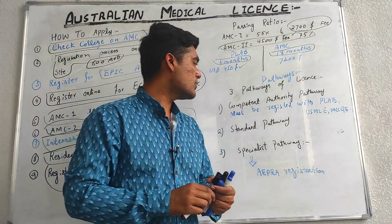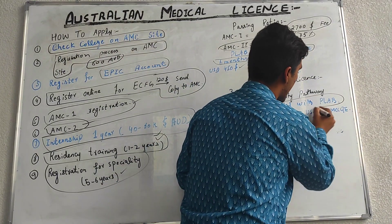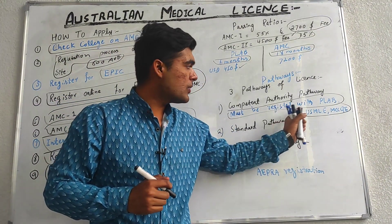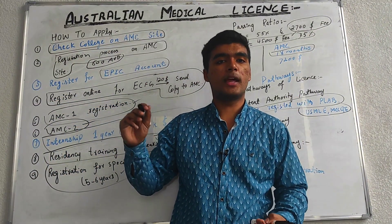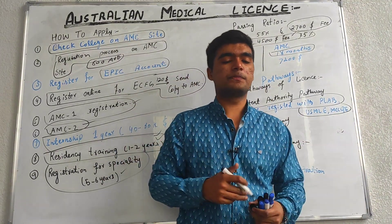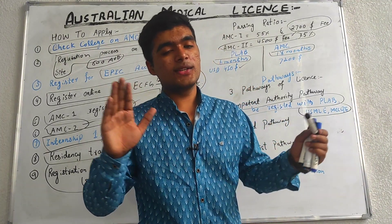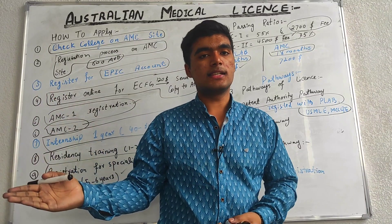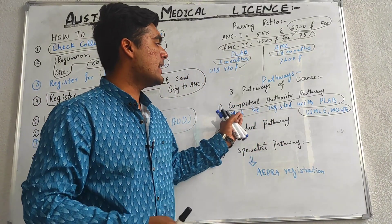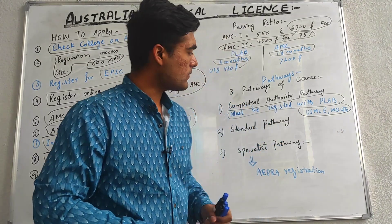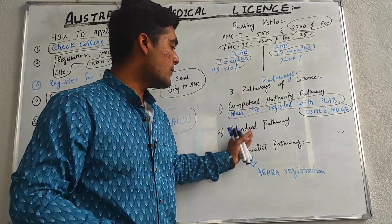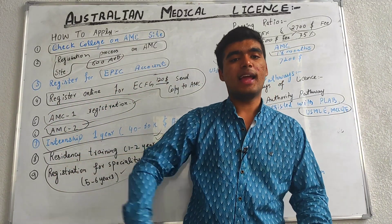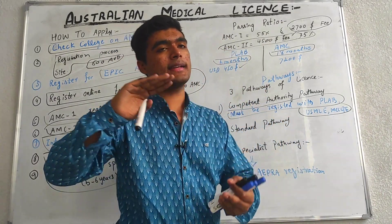In the Competent Pathway, you must be registered with PLAP, USMLE, or MCCQE (Canadian examination). If you have passed PLAP 1 and PLAP 2 and are registered with the GMC, you don't need to sit the AMC licensing exam — you can directly apply and get your license. The Standard Pathway requires sitting AMC Step 1 and AMC Step 2, then completing the full internship and specialization process — a very long and demanding route.